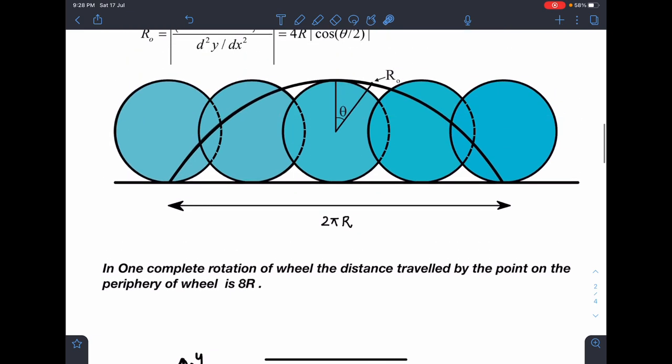In one complete rotation of the wheel, the distance traveled by the point on the periphery of the wheel is 8R. So distance between here to here is 2πR, whereas this distance traveled by the particle is going to be 8R.